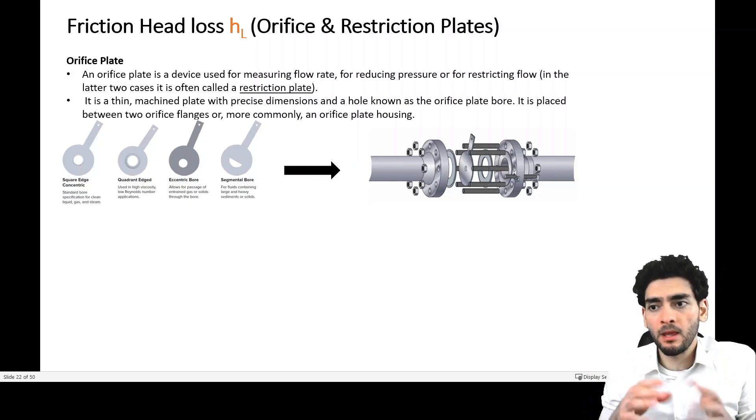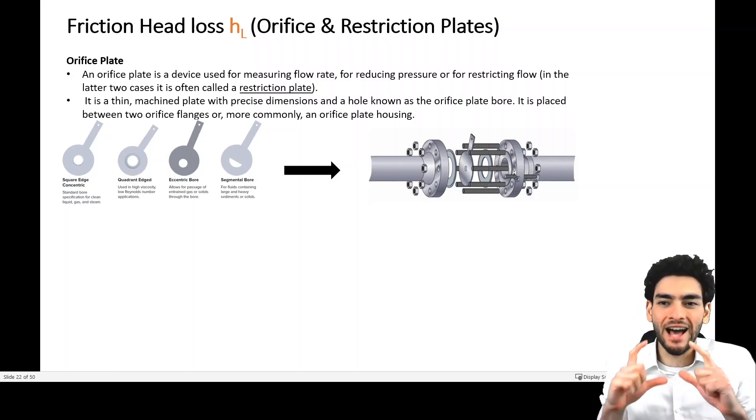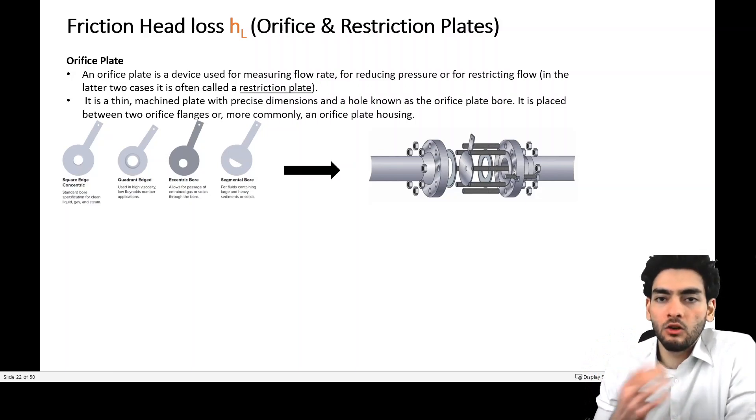An orifice plate can also be used for reducing pressure or restricting flow. In the latter two cases, we often call it a restriction plate. It's essentially a thin plate with precise dimensions and a hole inside that thin plate, known as the orifice plate bore.